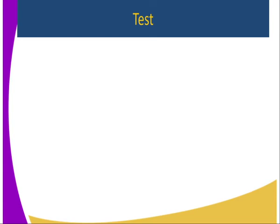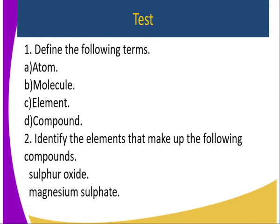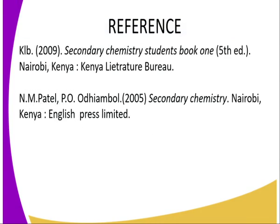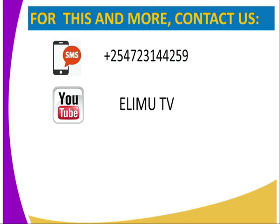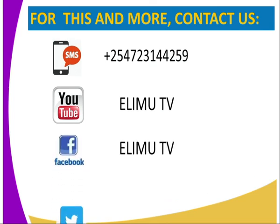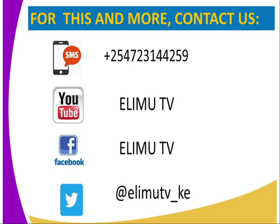For the test of this lesson, define the terms atom, molecule, element, and compound. Question two: identify the elements that make up sulfur oxide and magnesium sulfate. You can refer to the Students' Chemistry Book One, or contact us on the numbers on your screen, or visit our Facebook and YouTube page at Elimu TV. Once again, your tutor Mr. Mwangi Francis — stay tuned for more lessons to come. Thank you.